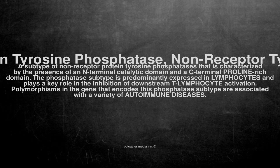The phosphatase subtype is predominantly expressed in lymphocytes and plays a key role in the inhibition of downstream T-lymphocyte activation. Polymorphisms in the gene that encodes this phosphatase subtype are associated with a variety of autoimmune diseases.